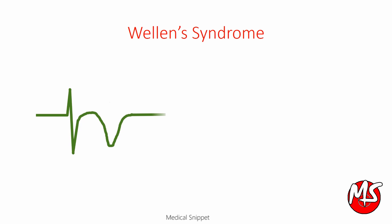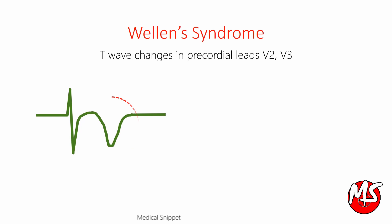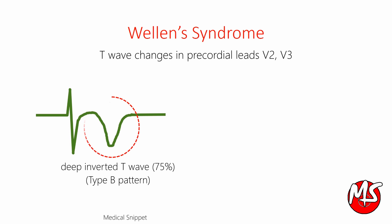The syndrome criteria includes the characteristic T wave changes in the precordial leads V2 and V3. It may extend from V1 to V6 also. The most common type is the deep inverted T wave, seen in 75% of cases.